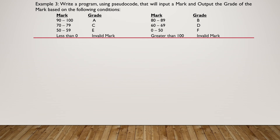Example 3: Write a program using pseudocode that will input a mark and output the grade based on the following conditions: 90–100 is grade A, 80–89 is grade B, 70–79 is grade C, 60–69 is grade D, 50–59 is grade E, 0–50 is grade F. Any mark less than 0 or greater than 100 is an invalid mark.